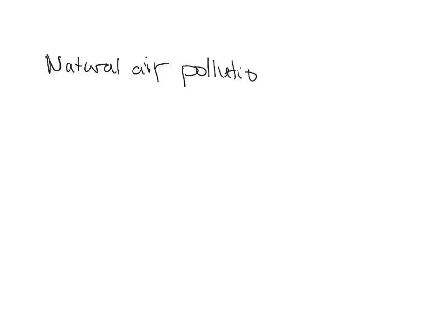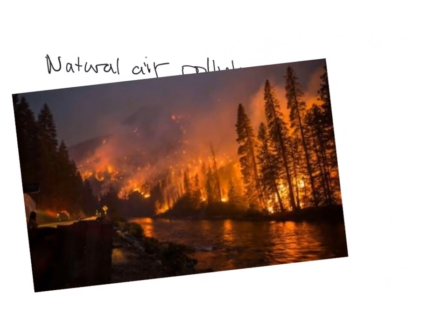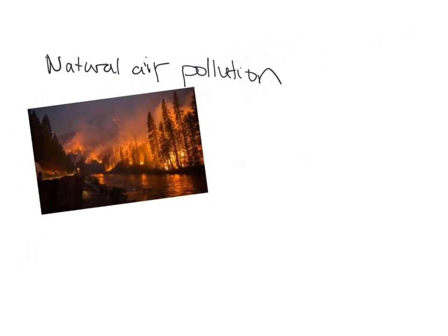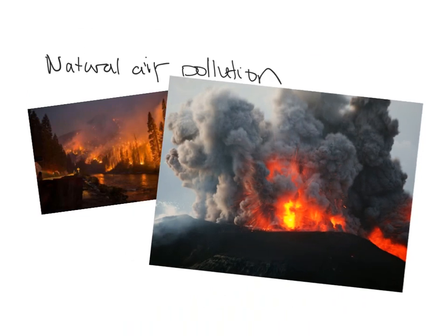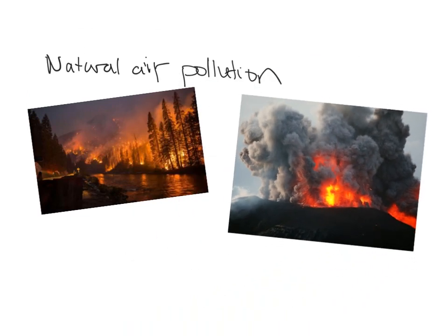There are also some sources of natural air pollution — not necessarily human-generated. A lot of these natural air pollutants also come from burning. One example would be forest fires, and another example would be volcanoes. Volcanoes produce a lot of sulfur dioxide, particulate matter, carbon monoxide, and nitrogen oxides. Forest fires produce particulate matter, nitrogen oxides, and carbon monoxide.